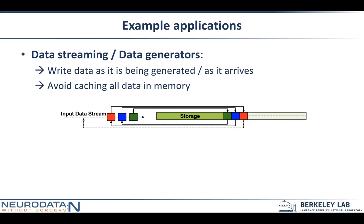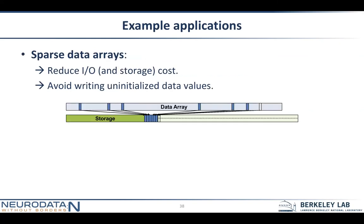The third example is when you have sparse data arrays — you can avoid writing uninitialized data values. You create the data set up front and then only fill in the chunks as they come in, which will make storage more efficient.